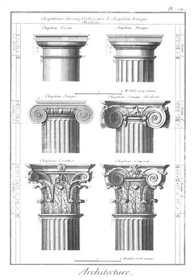Loggia: a gallery formed by a colonnade open on one or more sides. The space is often located on an upper floor of a building overlooking an open court or garden.